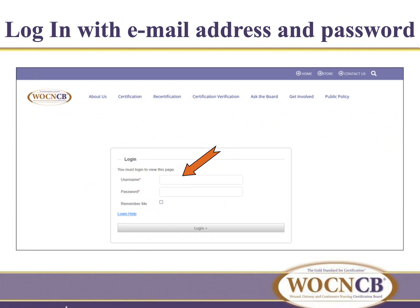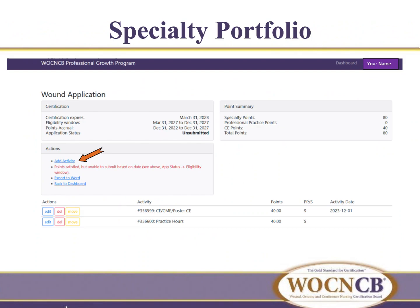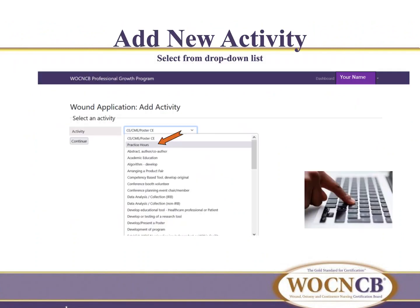You are ready to log in to your PGP account using your email and password. After logging in, you are at your dashboard. Click on wound first, then click on add new activity. Click the down arrow to bring the drop-down list into view, then click on practice hours and click continue.